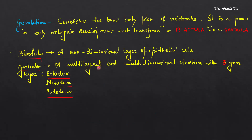As we all know, gastrulation establishes the basic body plan. It transforms the early embryo from blastula stage to a gastrula stage. So gastrulation establishes the basic body plan of vertebrates. It is a process in early embryonic development that transforms a blastula into a gastrula.